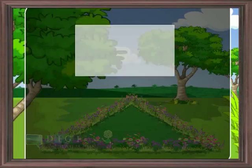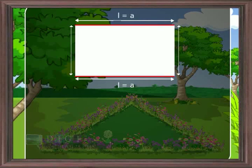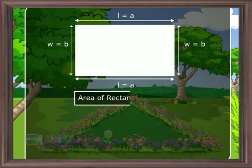As we can see in this figure, a rectangle is divided into two equal right angle triangles. Therefore, the area of a triangle will be half of the rectangle. Now, in this rectangle, the length is a and width is b.